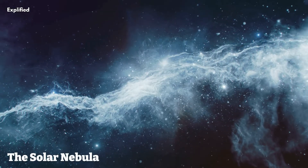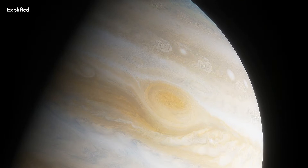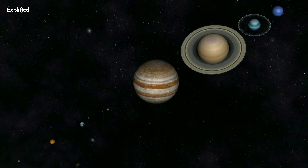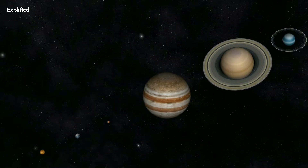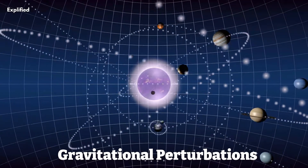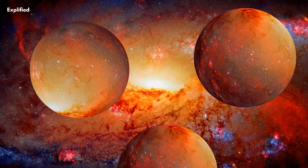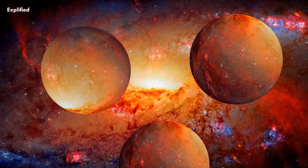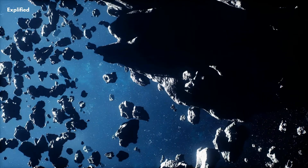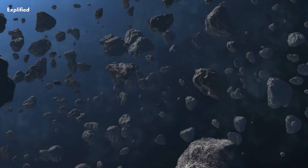As the solar nebula began to condense, forming the sun at its core, the gravitational forces of Jupiter prevented the formation of a planet in the region between Mars and Jupiter. The interplay between gravitational perturbations, known as orbital resonances, prevented the accretion of material into a single planetary body, and instead resulted in the formation of numerous smaller objects, giving rise to the asteroid belt we observe today.